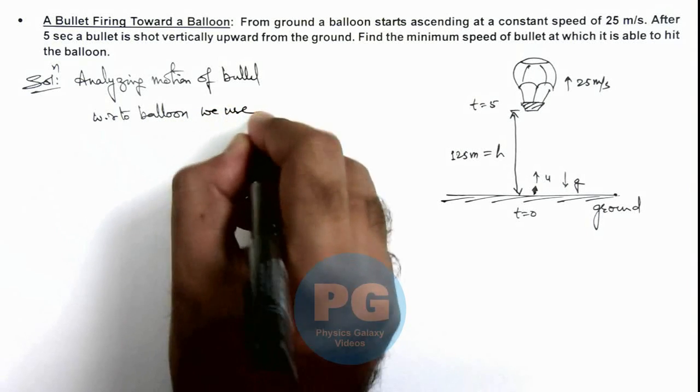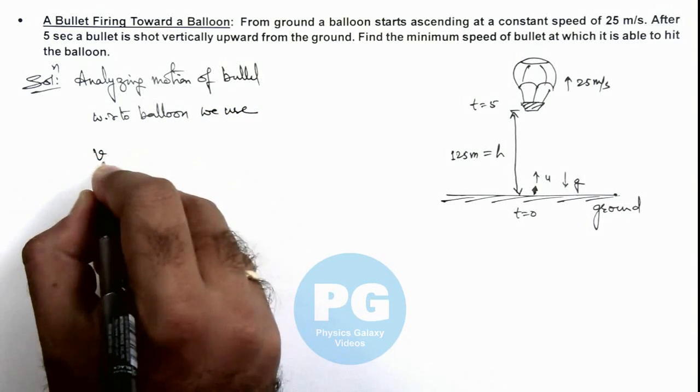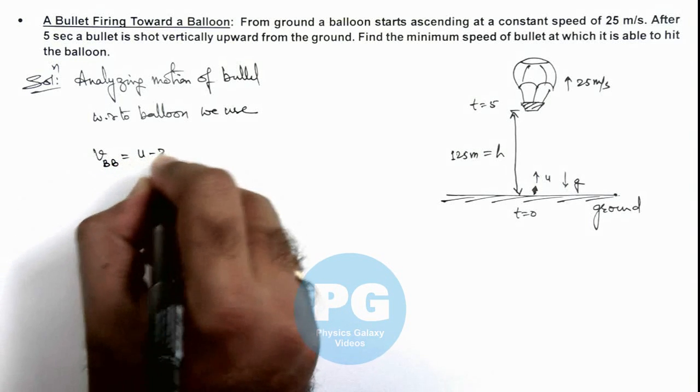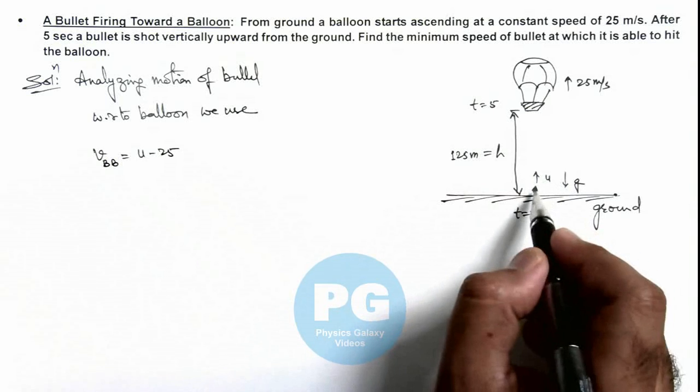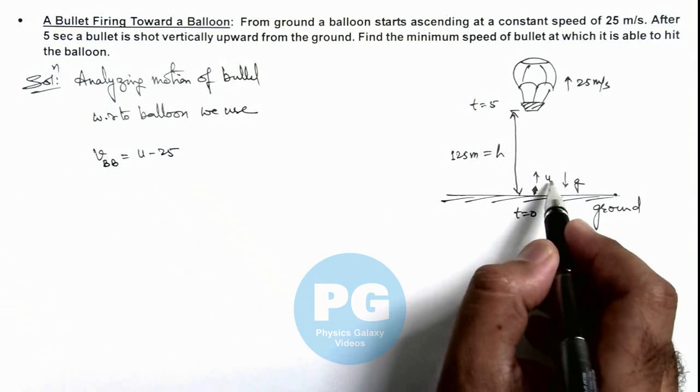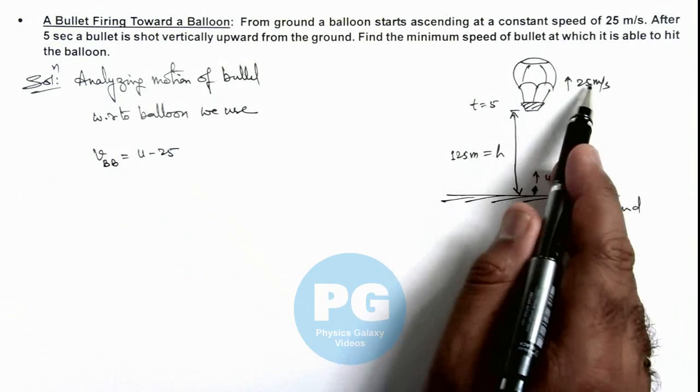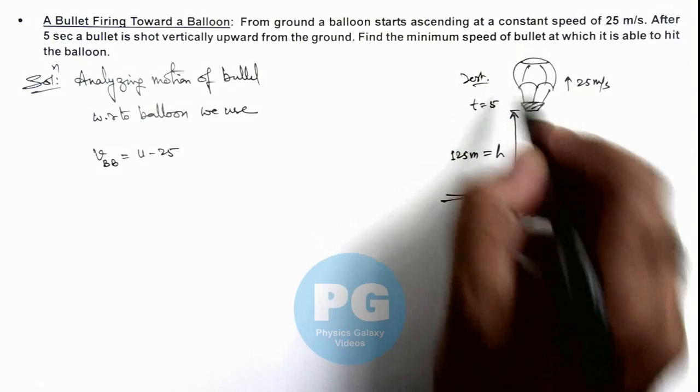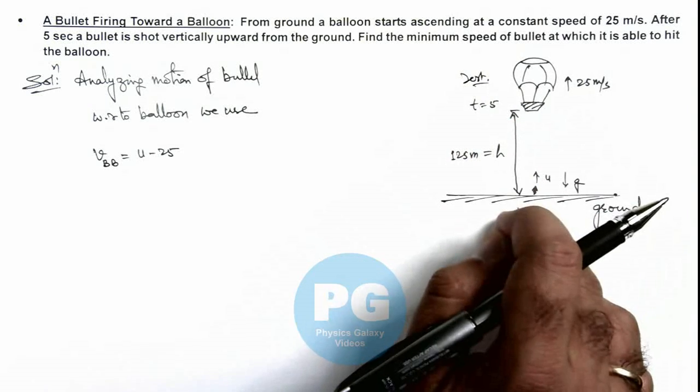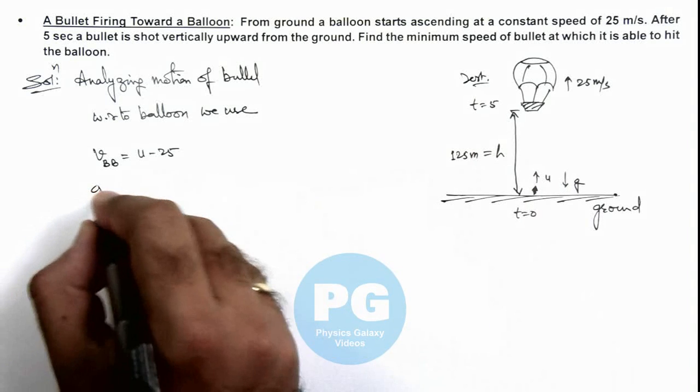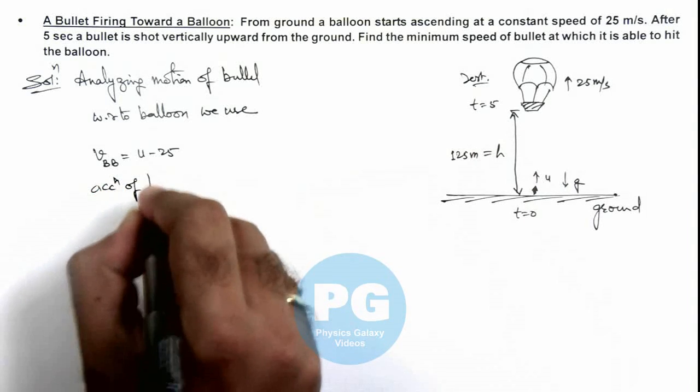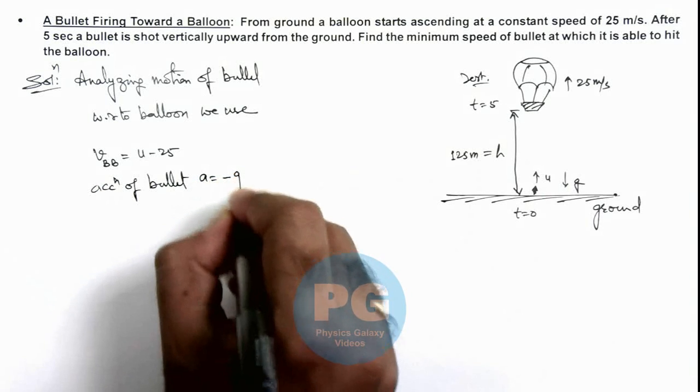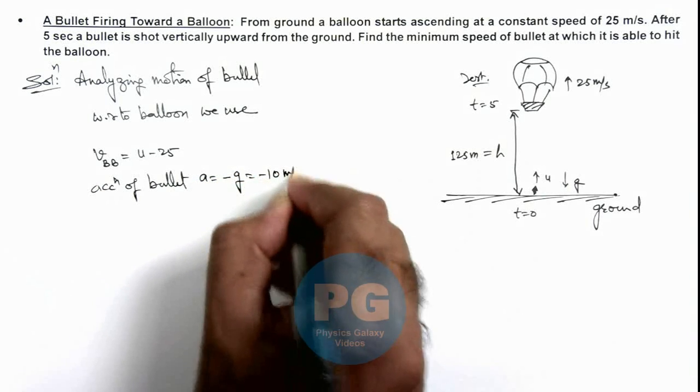We use velocity of bullet with respect to balloon, which will be u minus 25. As it is going up at speed u and balloon is going up at 25, if balloon is taken at rest, the speed of bullet will be u minus 25 initially. And acceleration of bullet we can directly write as minus g, that is minus 10 meters per second square.